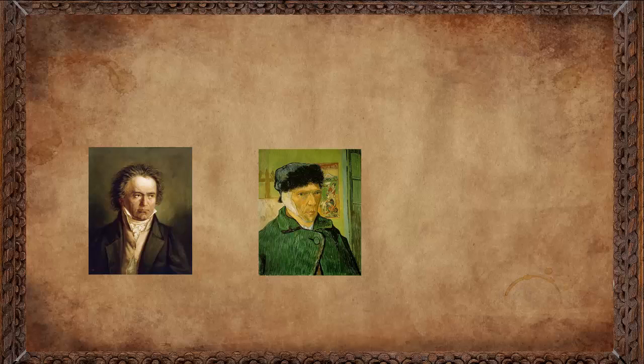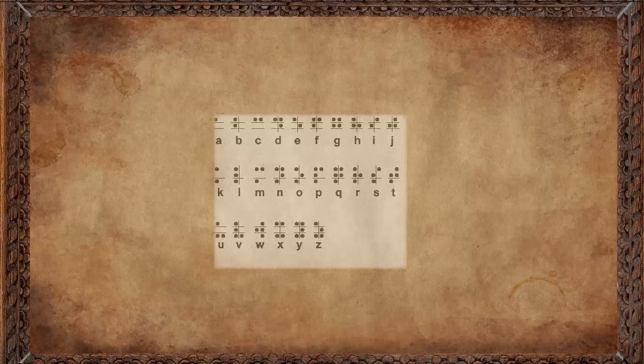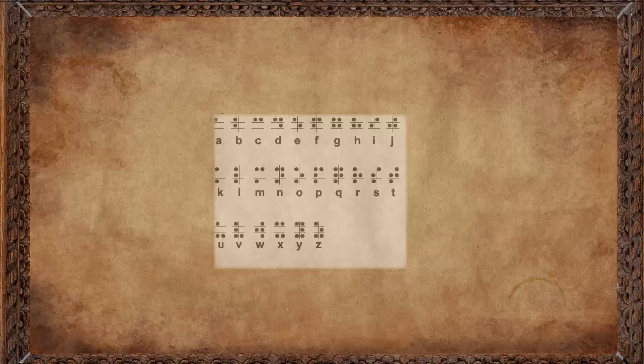Perhaps that's why 50 years later the painter Van Gogh would let his ear go for a self-portrait. At about the same time Beethoven's Ninth Symphony premiered, a book came out. It was a strange book written by a teenager. It was called method of writing words, music and playing songs by means of dots for use by the blind and arranged for them. The system was invented. Blind people could read.